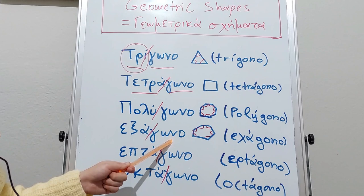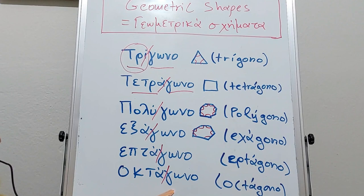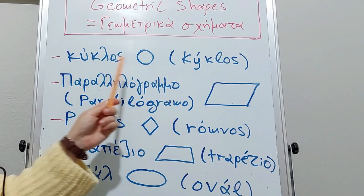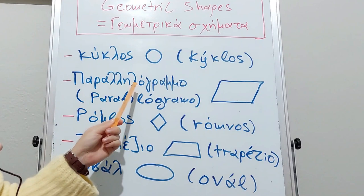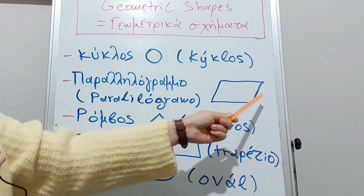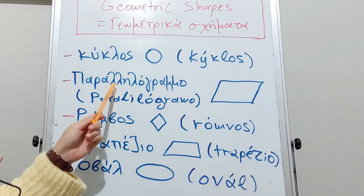Here we have the shape of circle - κύκλος. The parallelogram, παραλληλόγραμμο, has its opposite sides equal. Note the double lambda.